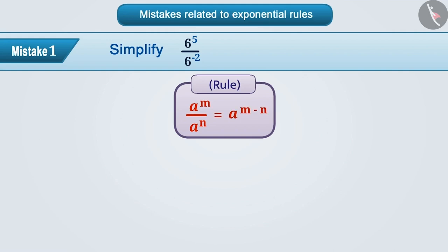Not focusing on the signs, instead of subtracting minus 2 from 5, they subtract 2 from 5 and get the answer 6 cube, which is an incorrect answer.